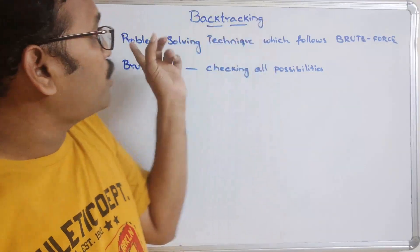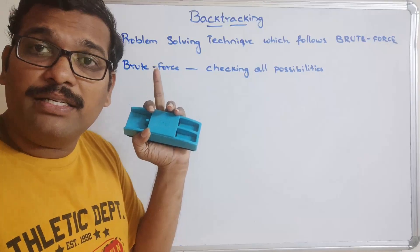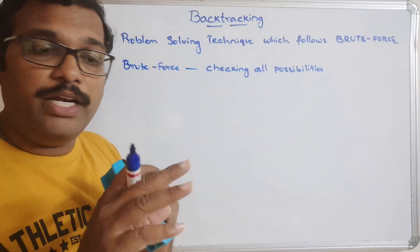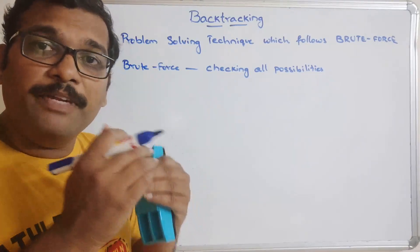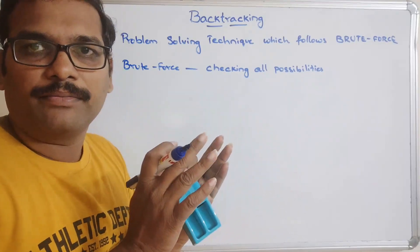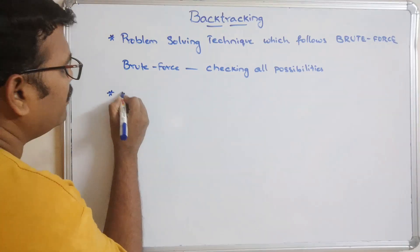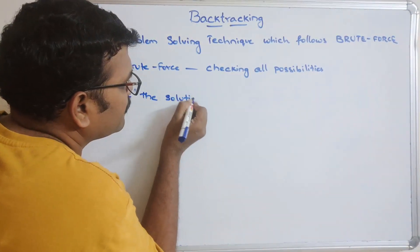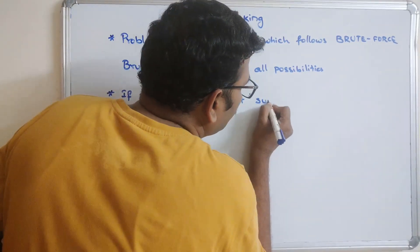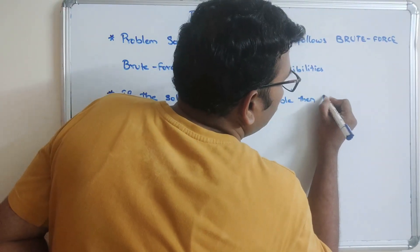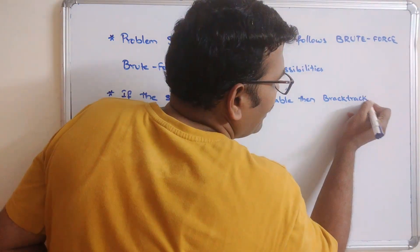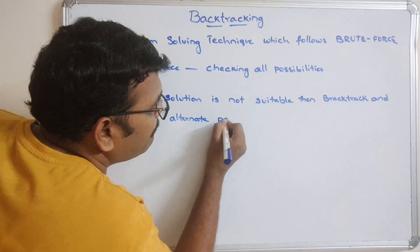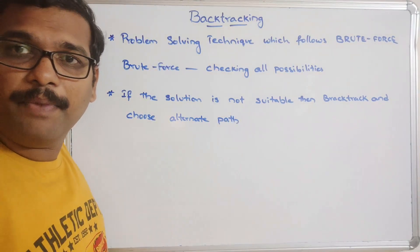The name itself indicates what backtracking means. If the current solution is not viable or not proper, then immediately we can undo it — we backtrack to the previous point and go with an alternate path. So if whatever solution we have is not suitable, we backtrack and choose an alternate path.